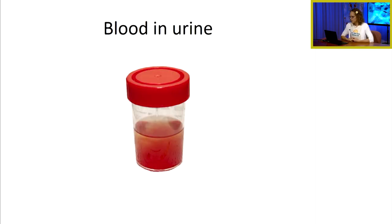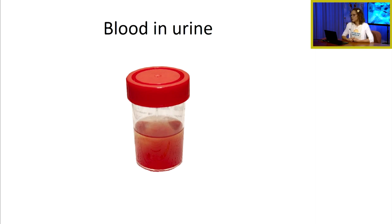Blood in the urine can be a sign of a urinary tract infection, kidney stones, or other conditions. It's important to identify blood in a patient's urine and report it to the nurse manager, clinical instructor, and physician so further investigation can be done to determine the cause.